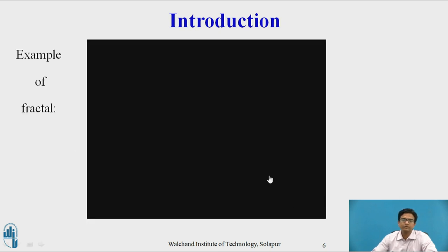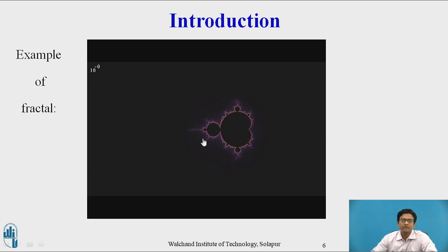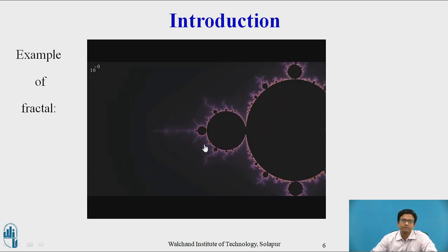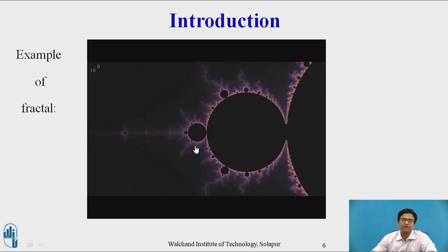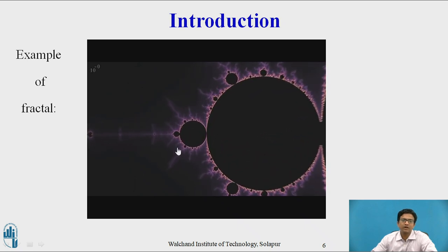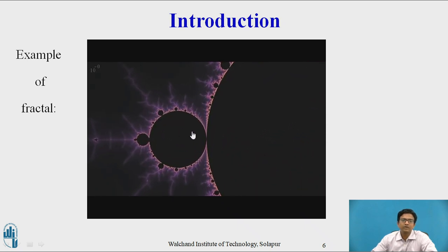As an example of a fractal, whenever you zoom this object, you can see the same object is repeated. Whenever you zoom this thing, again you are going to see the same part.